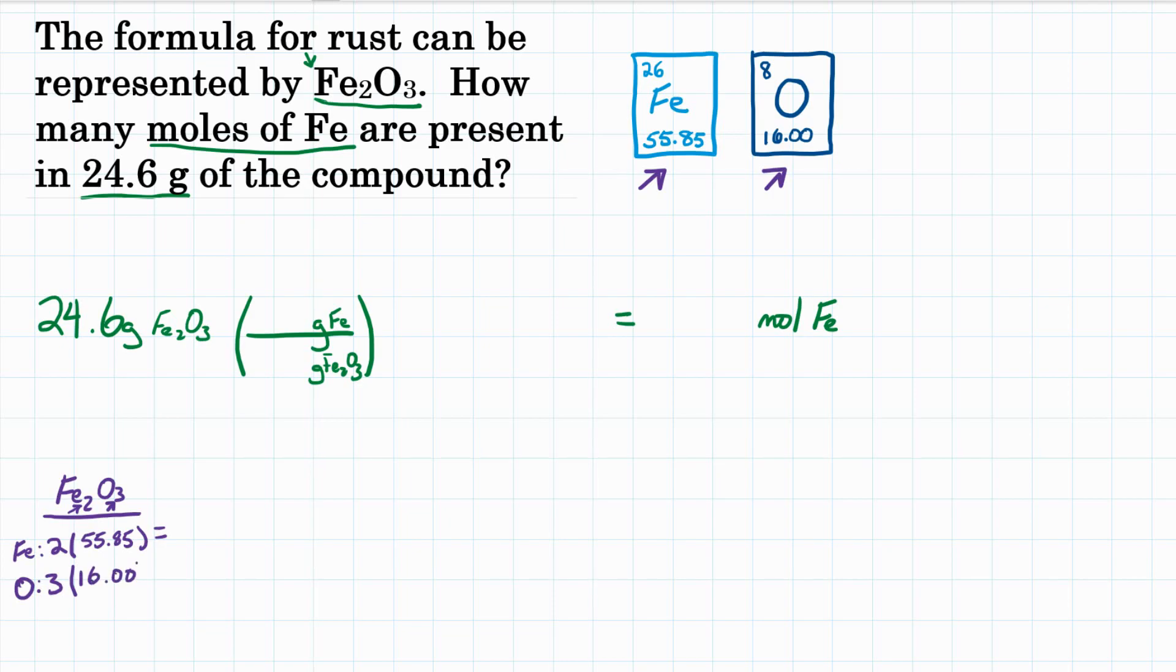Got those from the periodic table. If we add these masses together, 111.7 grams for iron and 48 grams for oxygen, if we add these together we get the total molar mass for Fe2O3, 159.7.